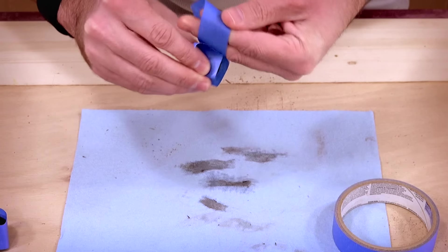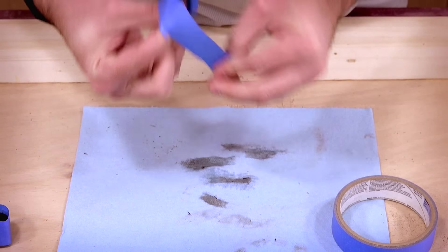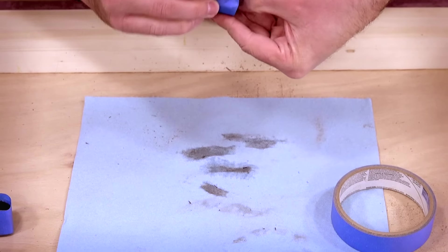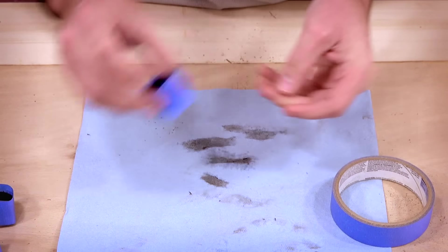After you wrap it in masking tape, allow it to dry completely in this position. Once dry, it'll retain the shape and allow for it to be coiled even tighter.